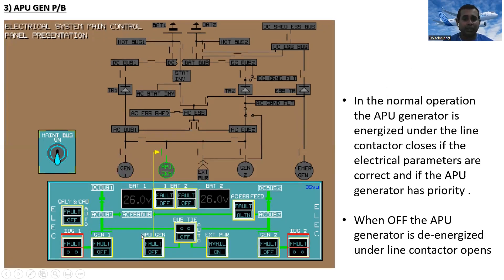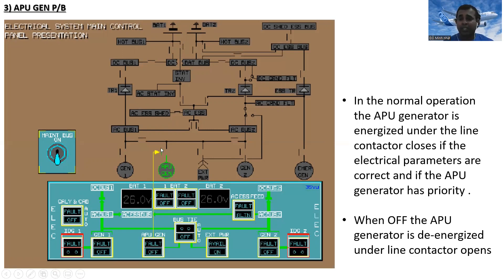Next is the APU GEN push button. In normal operation, the APU generator is energized and the line contactor closes if the electrical parameters are correct and the APU generator has priority. When the APU GEN push button is pressed, the line contactor closes and the aircraft electrical circuit is energized. When set to off, the APU generator is de-energized and the line contactor opens.